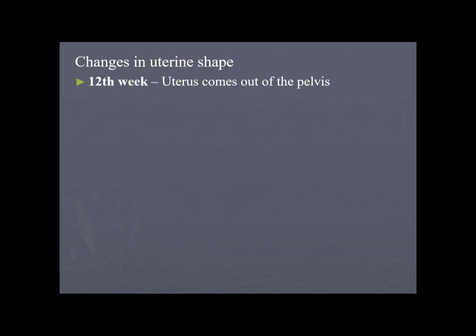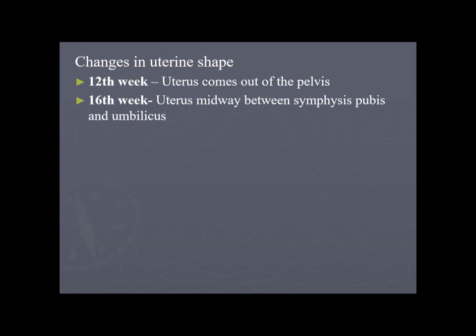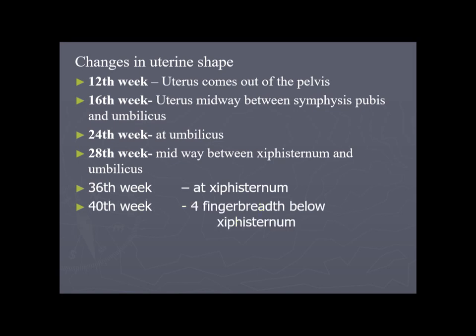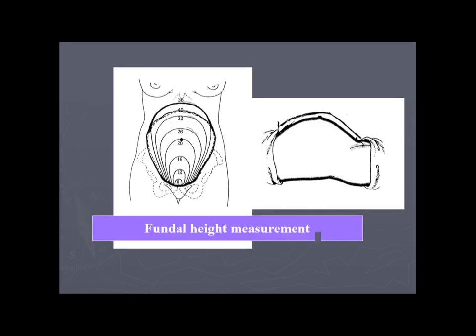Changes in uterine shape by week: at 12 weeks, the uterus comes out of the pelvis and becomes an abdominal organ. At 16 weeks it is midway between the symphysis pubis and umbilicus; at 24 weeks it reaches the umbilicus; at 28 weeks it is midway between the xiphisternum and umbilicus; at 36 weeks it reaches the xiphisternum. At 40 weeks it is four finger-breadths below the xiphisternum due to lightening — the presenting part descends into the pelvis, bringing the fundus down.